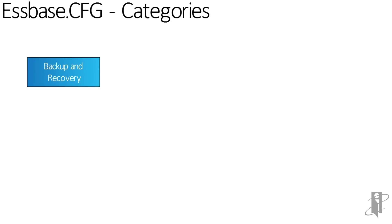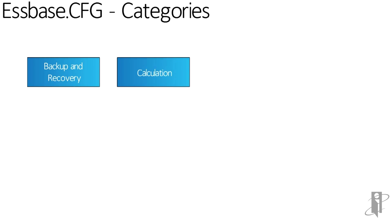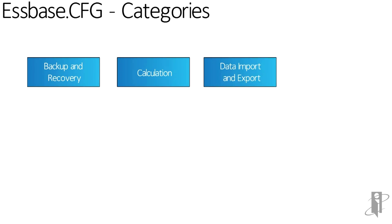There are ten major categories of sspace.cfg settings. Some are pretty easy to understand, like backup and recovery. Some are fairly extensive and complicated and cover things like calculations — such as how many threads you want each calculation to handle. Some handle data importing and exporting, for example how many threads you want to use for importing or exporting.